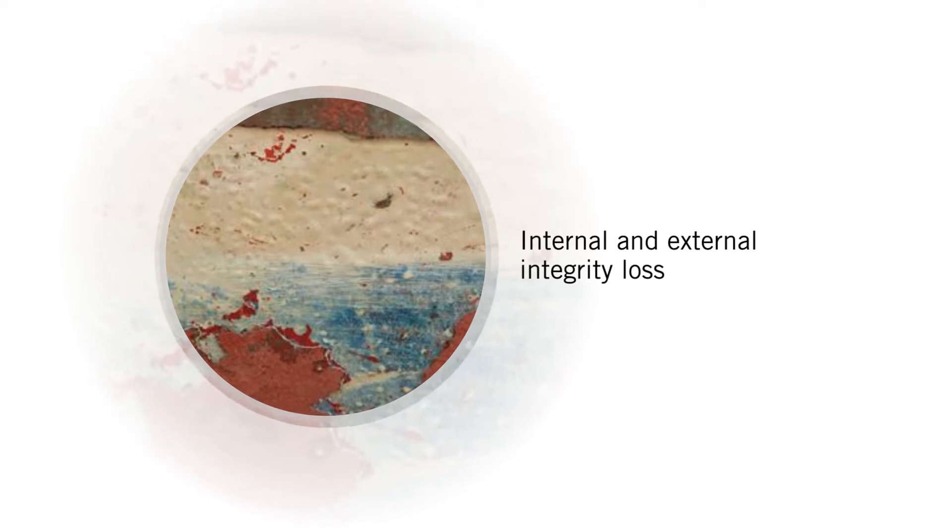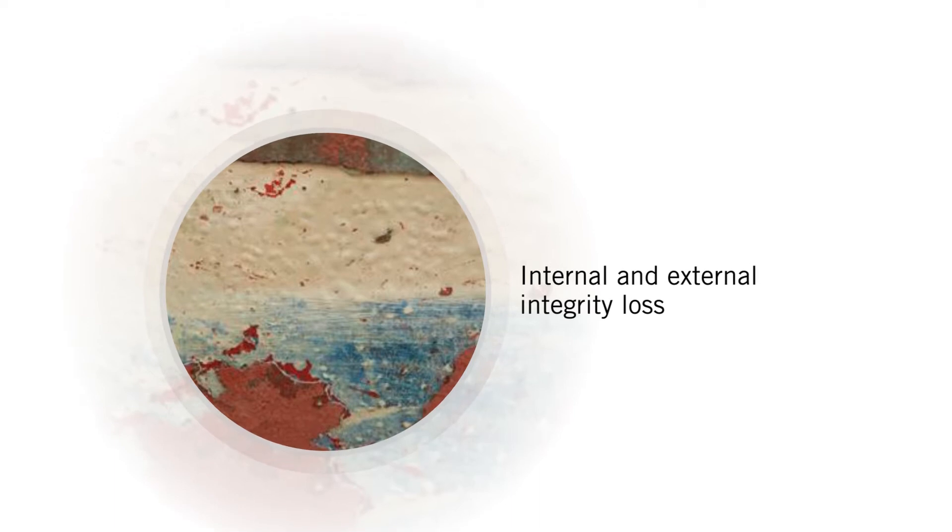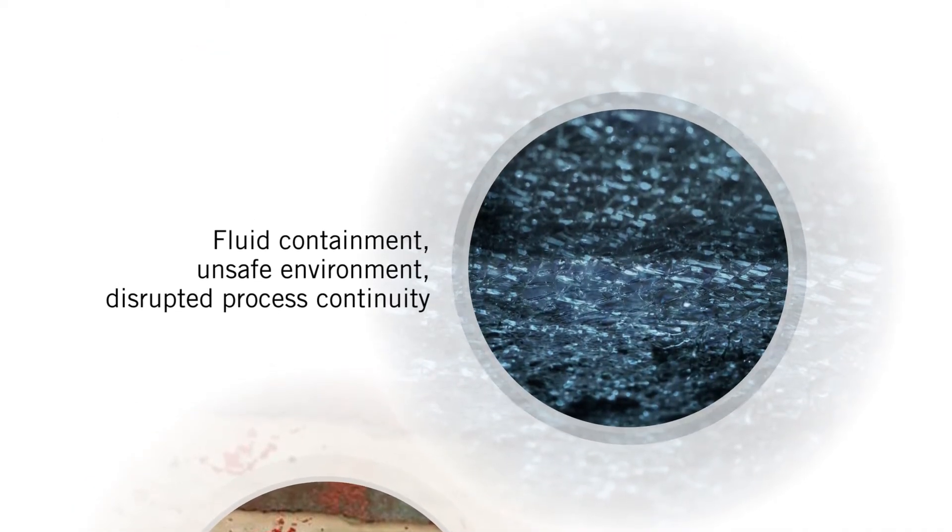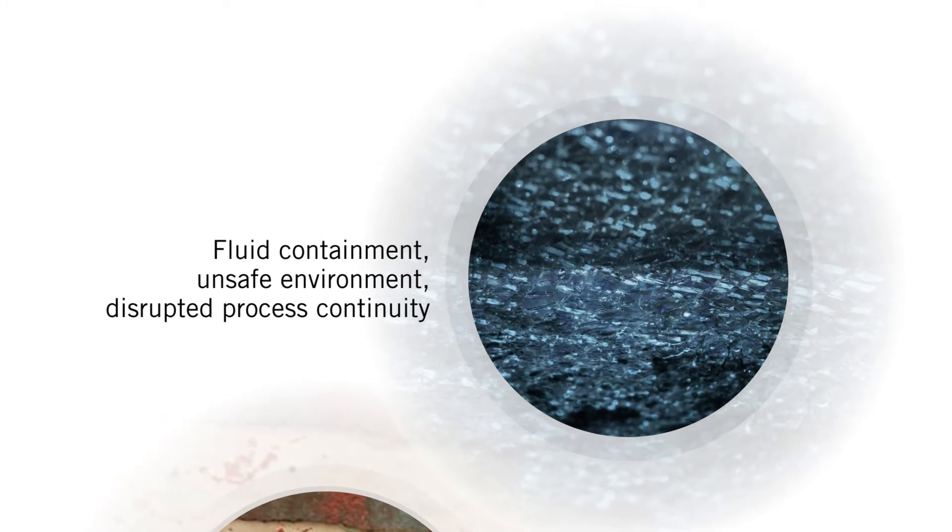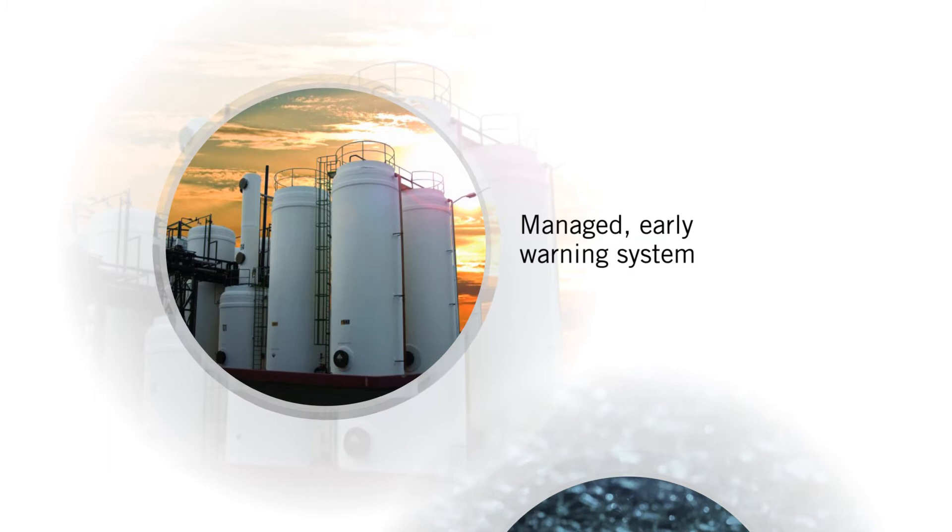Internal and external integrity loss caused by fluid permeability and leakage is a risk when storing chemical and aggressive fluids. It can result in fluid containment issues, an unsafe environment, and disrupt process continuity. With a managed early warning system that actively monitors the quality of an installation,